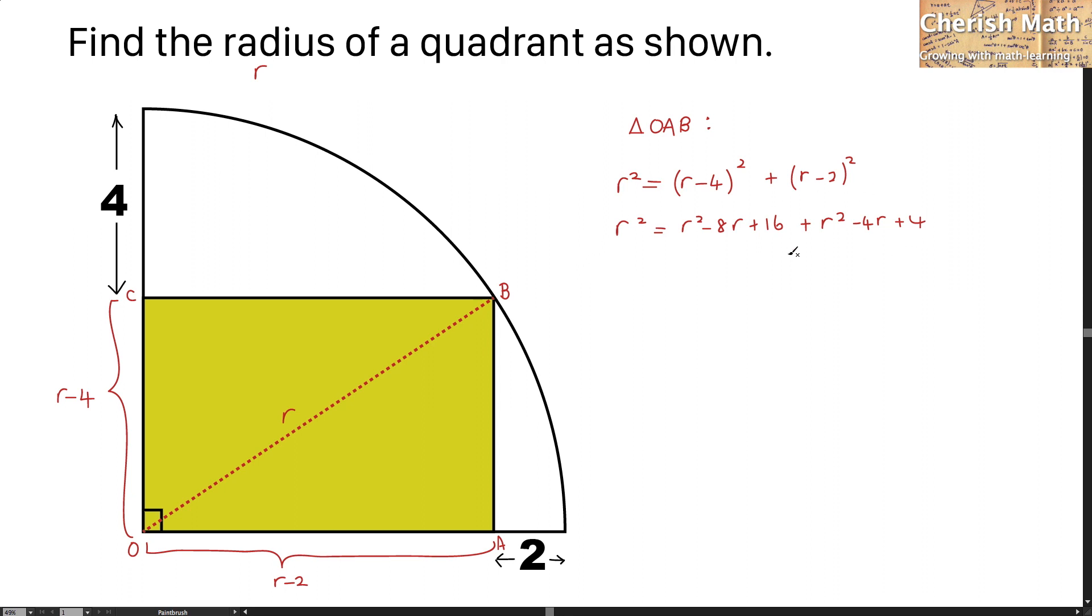Simplifying this equation: r squared minus 12r plus 20 equals 0.